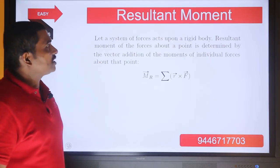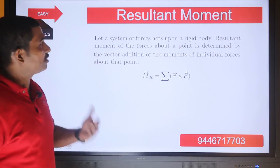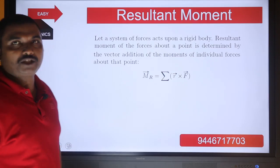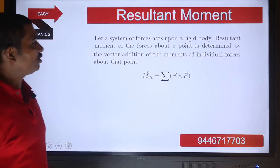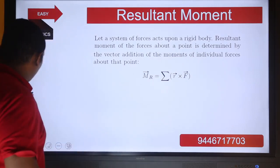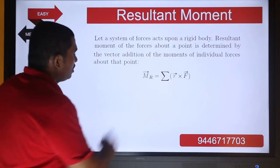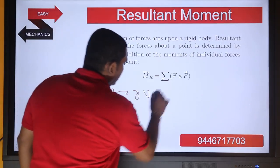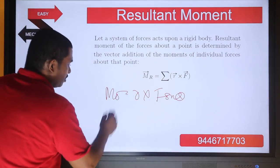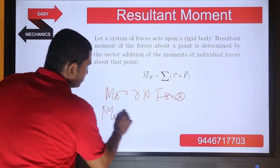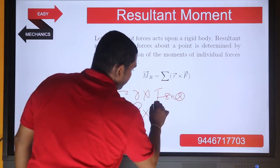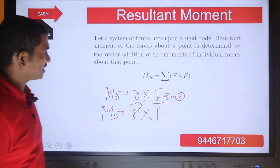Now, let a system of forces act upon a rigid body. The resultant moment of the force about a point is determined by the vector addition of the moments. We know that M0 equals r into f sin theta, or in vector format, M0 equals vector r cross vector f.